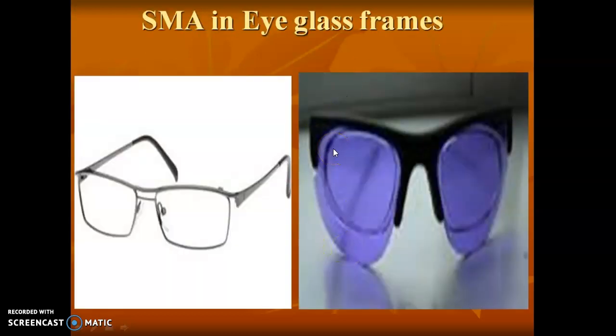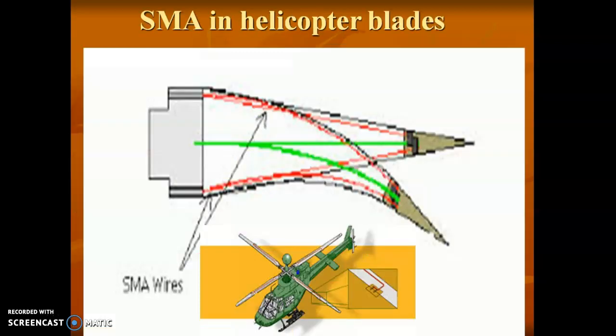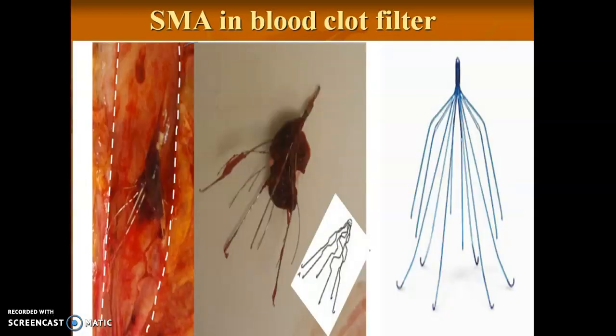The applications of SMA include fiber glasses, which are made up of shape memory alloys. Toys used by children in day-to-day life are also made up of shape memory alloys, which can regain their original shape or size. Helicopter blades also use SMA material.